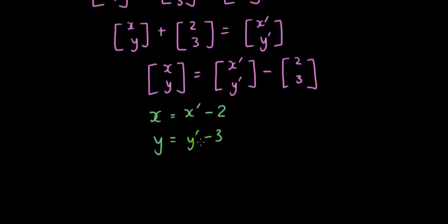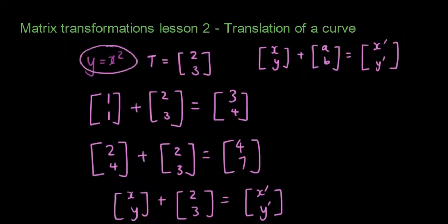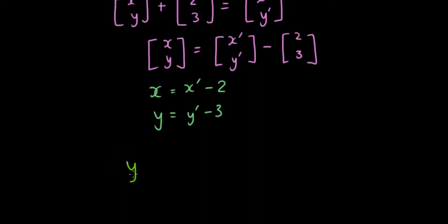Now if we know from the original equation y is equal to x squared, and we know that x' minus 2 will give you x, y' minus 3 will give you y, we can now relate x' and y' together through this original equation. And that's the only way we can somehow link x' to y'.